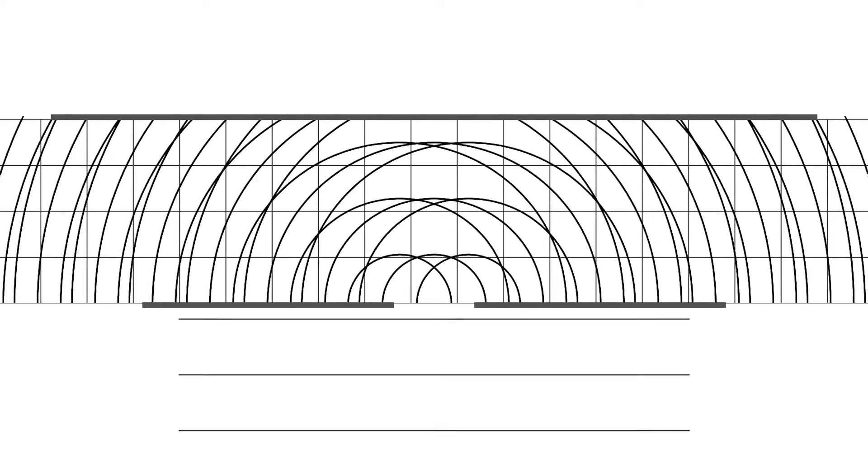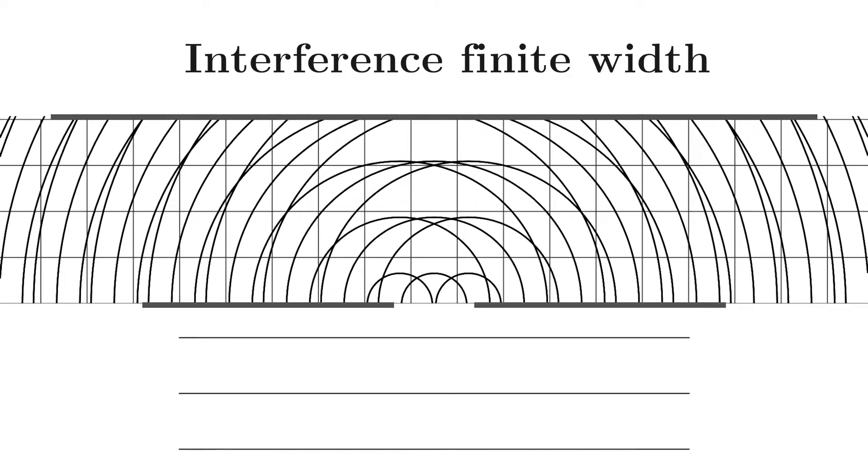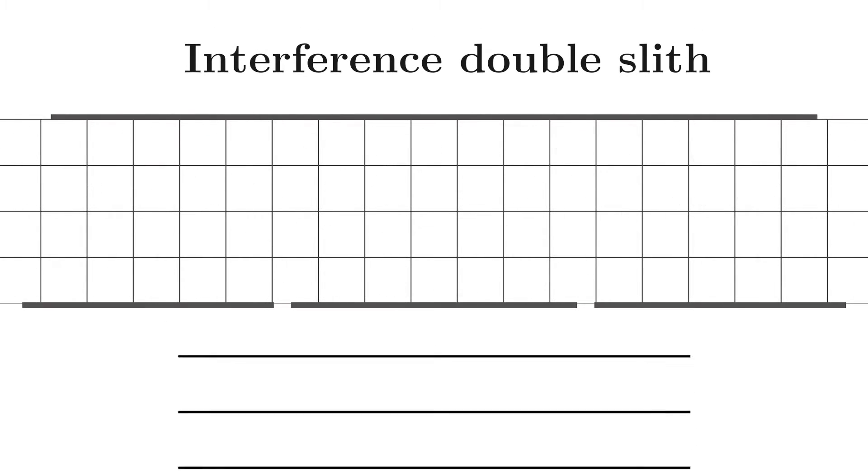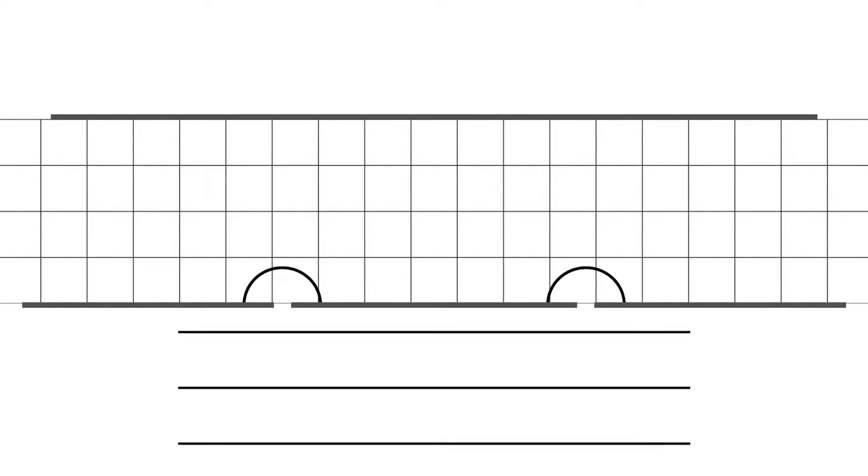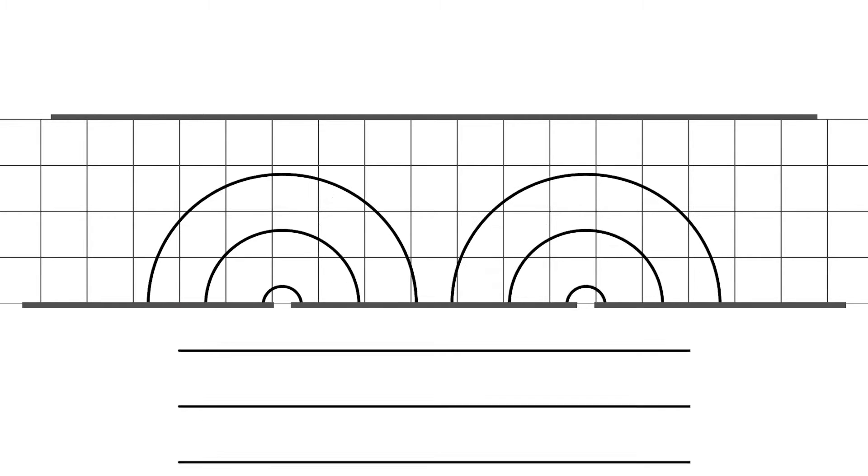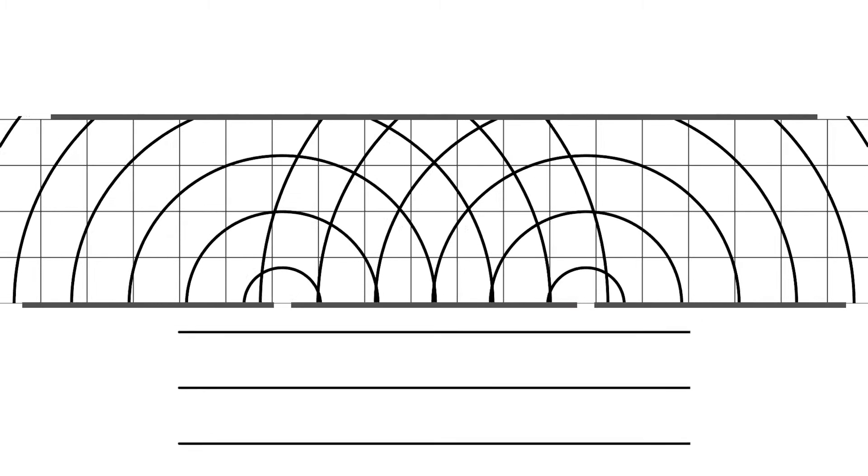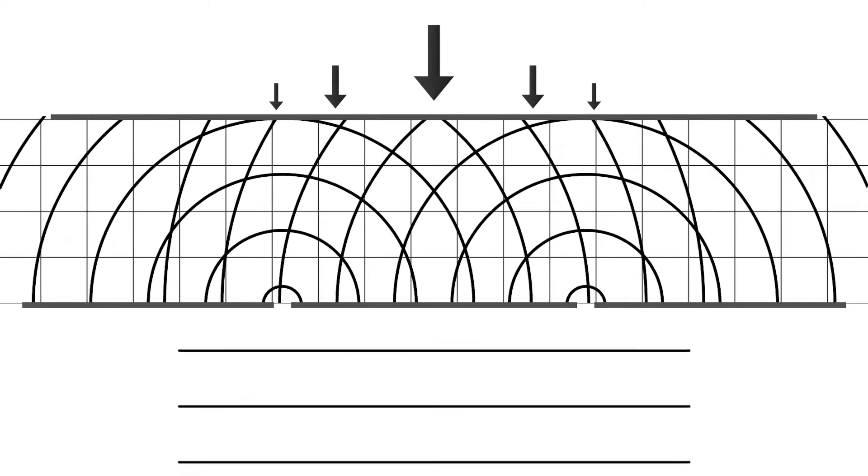But I will ignore interference from finite width of the slit in this video. Instead we will focus on the double-slit interference pattern. We will have constructive interference where the black circles meet. That's because they are wavetops and therefore they are in the same phase. I've indicated with arrows where we see constructive interference.